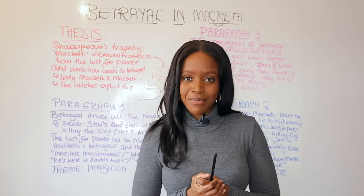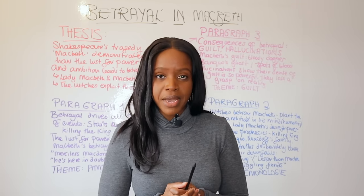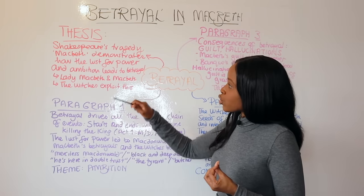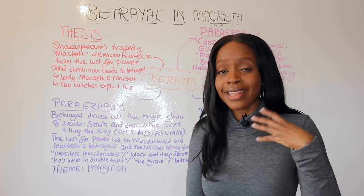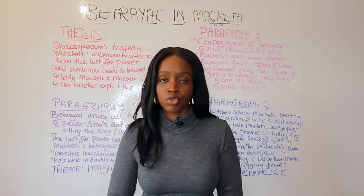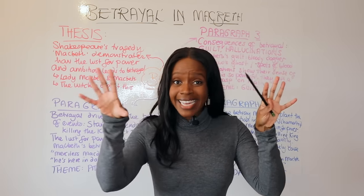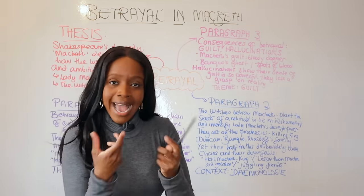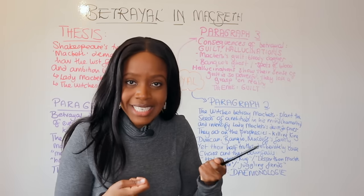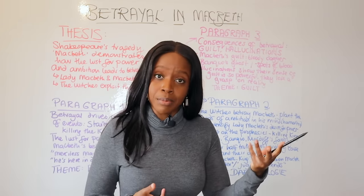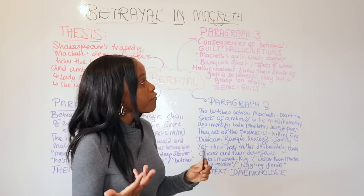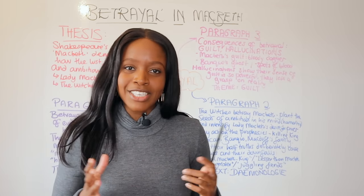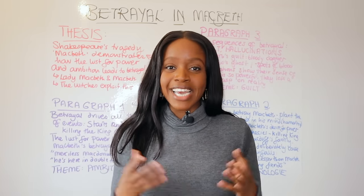So that's really it when it comes to writing about the theme of betrayal in Macbeth. Always start with a powerful thesis statement. In your first paragraph, talk about how the play starts and ends with betrayal. Your second paragraph discusses the witches and how they catalyze the tragic chain of events by betraying Macbeth and Lady Macbeth. Finally, end with talking about the consequences of betrayal. Thank you so much for listening and I hope this helped.